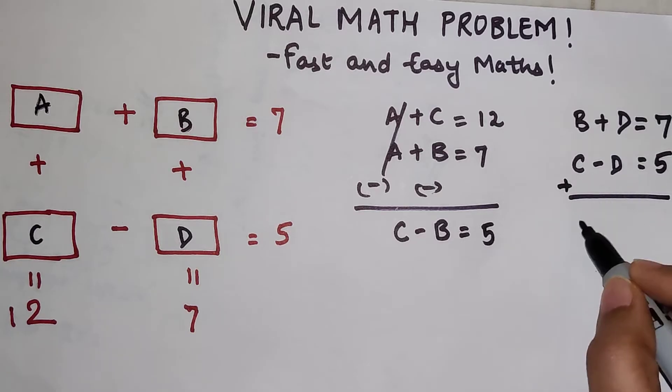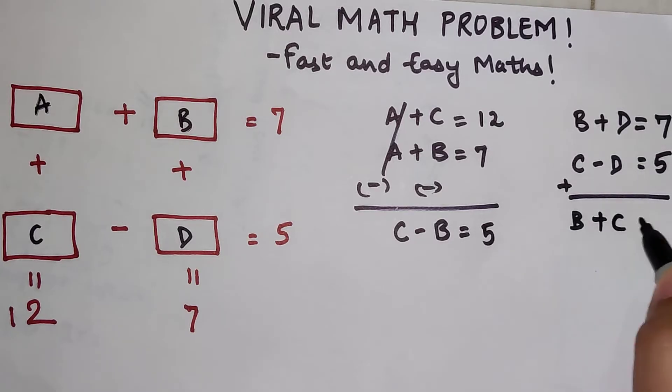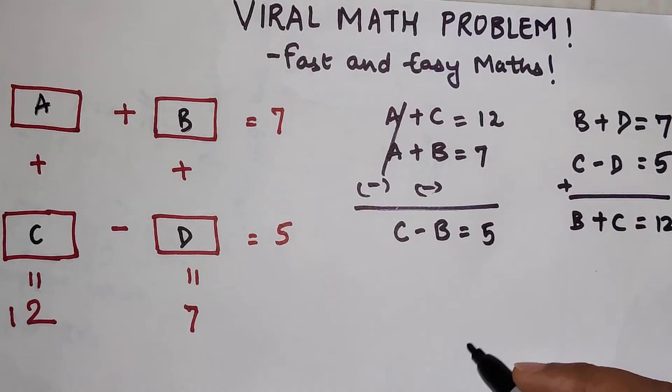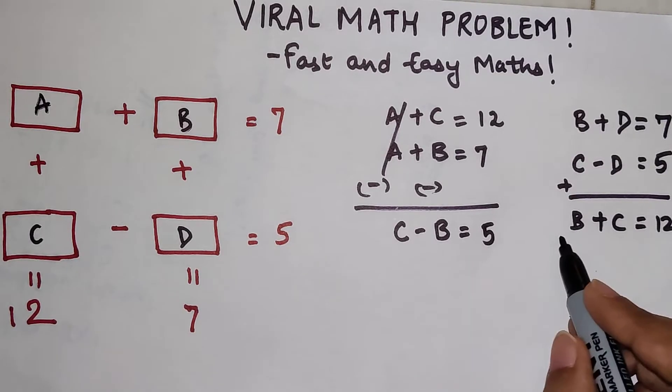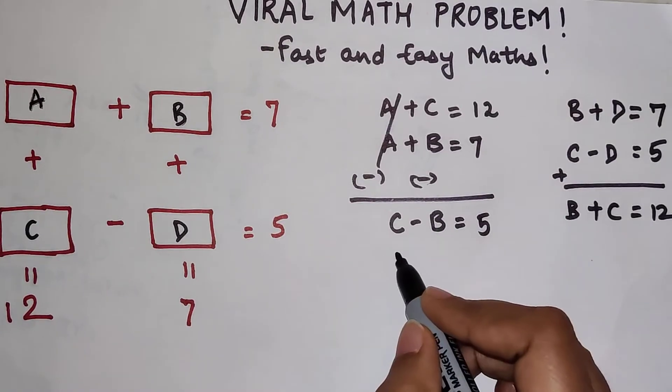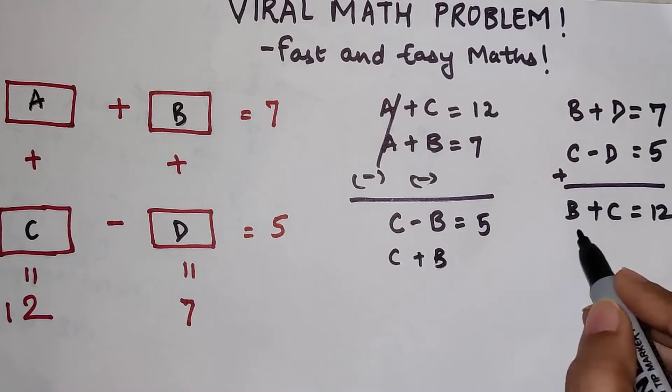So if I add them, then I can say B plus C gets me 12. Okay, so now over here I can write this in this way also: C plus B, right, because there's a plus sign.